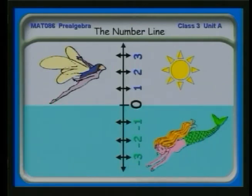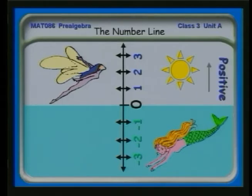You don't have to be only horizontal to have a number line. You can also have a number line vertical, as we saw with above sea level being positive and below sea level being negative. Before we continue, let's look at a little video that will help to reinforce this idea.